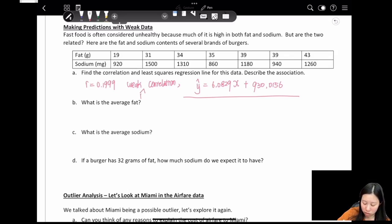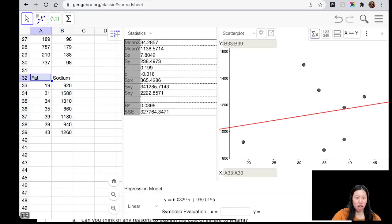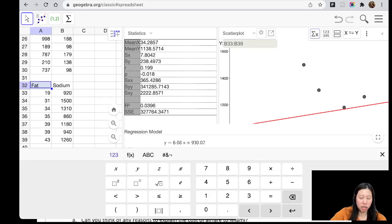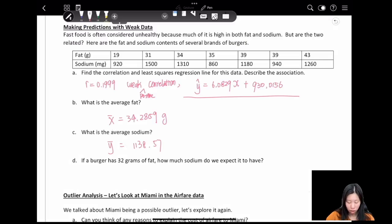From here, y-hat equals 6.829x plus 913.159. So basically we need to find the regression model - that's the linear regression model and it's a weak positive correlation. What's the average fat? From the statistics we can find that the first column is our x, the second column is our y. So the average fat is x-bar equals 34.2859 grams. And question C asks what's the average sodium, which is the mean of y: y-bar equals 1138.57.